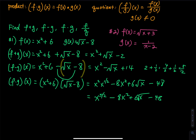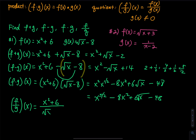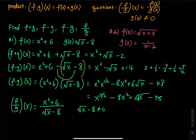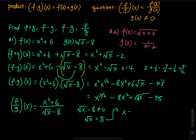The last one is f divided by g. So f over g of x equals x squared plus six divided by the square root of x minus 8. You have to specify that the square root of x minus 8 cannot be equal to zero. So square root of x equals 8, and squaring both sides gives x equals 64.